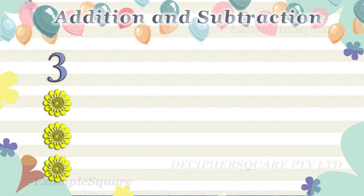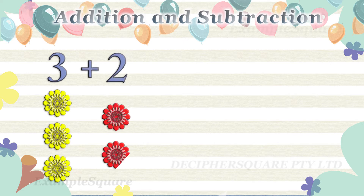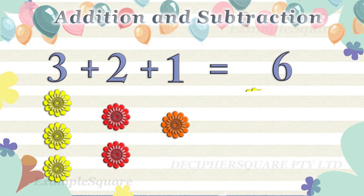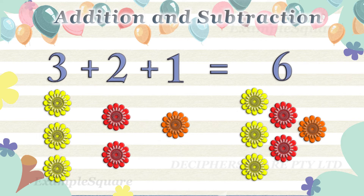There are three yellow flowers, two red flowers, and one orange flower. How many flowers are there altogether? To find the total number of flowers, the yellow flowers, red flowers, and orange flowers need to be added together. Three plus two plus one equals six. Together, there are six flowers.